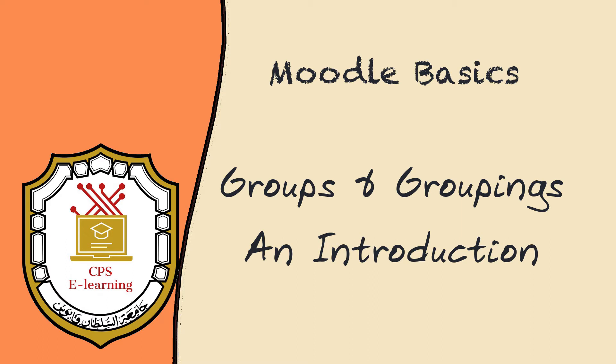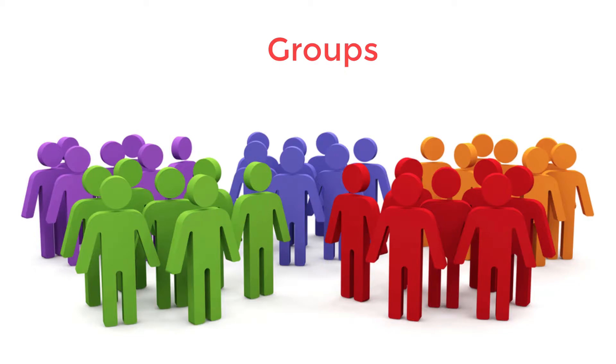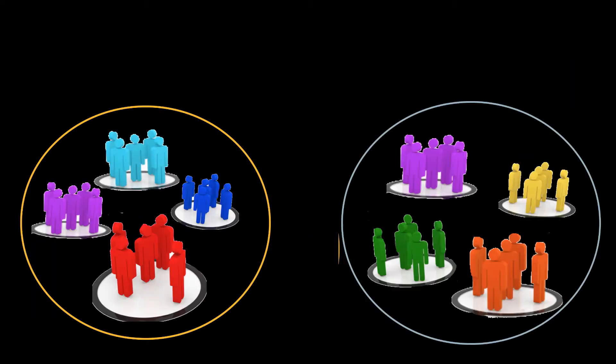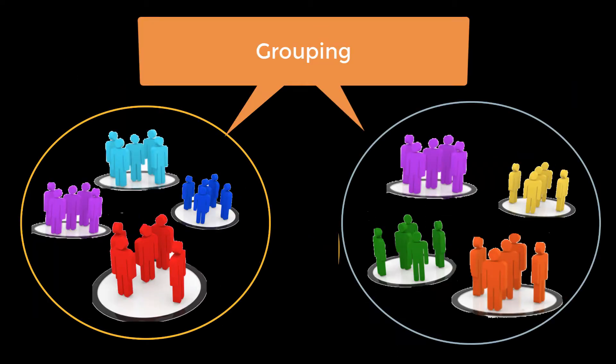In Moodle, groups and groupings are a specific way of putting participants in a group. A course may have only groups, which are a collection of participants placed in a group. A course may also have groups within a grouping. A grouping is a cluster of groups.